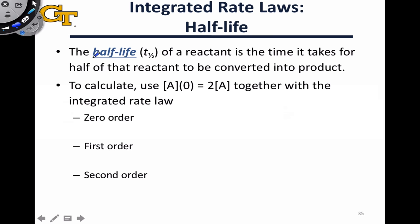One of the most useful concepts, now that we've discussed the integrated rate law, is known as the half-life, or T½. T½ is the time required for half of a reactant to be converted into product — in other words, the time necessary for the initial concentration of a reactant to be divided in half. To calculate this, we need to know the order of reaction and the integrated rate law, and we treat this like a problem where we know the initial concentration and the target concentration, which is half of the initial concentration.